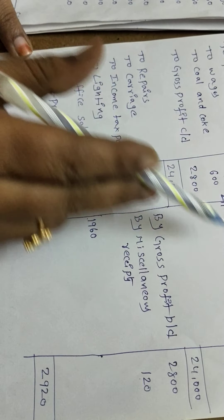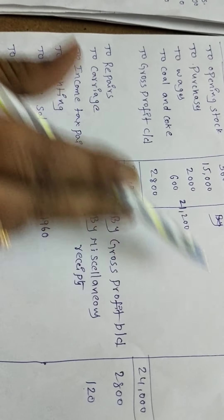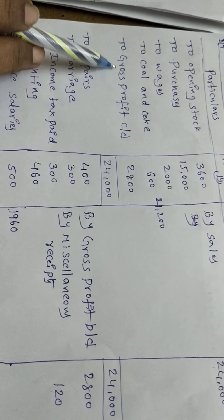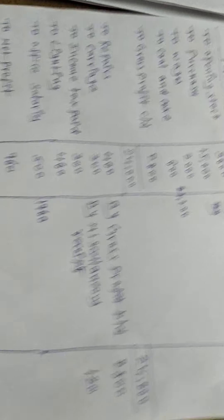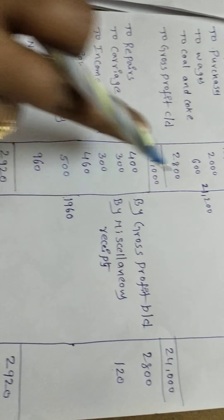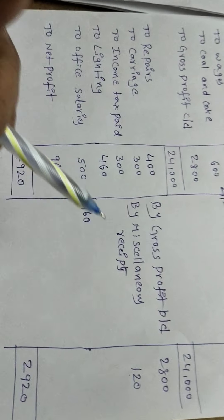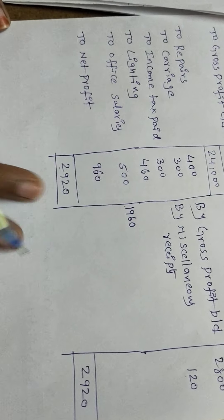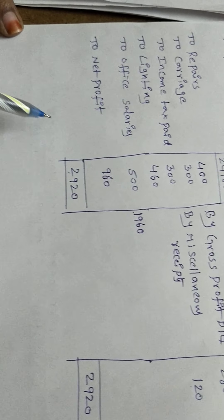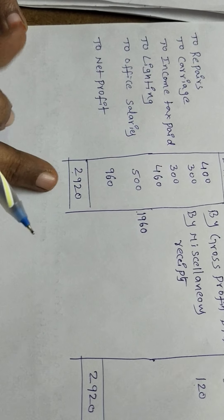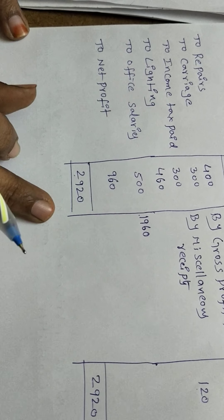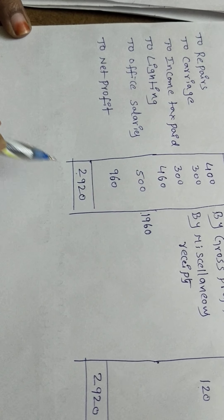In the trading account also, incomes were more than expenditure — that gave us gross profit. So the trading and profit and loss account is now complete. Next is the third component: balance sheet.